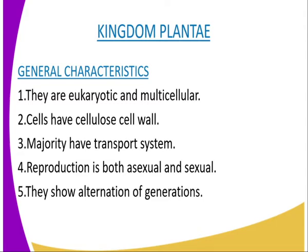Them being eukaryotic, you see that their organelles are bound — they are enclosed by a cell membrane. The second characteristic is that in most of them, the body is differentiated into leaves, stem and roots. The other characteristic is that their cells have cellulose cell walls. Another characteristic is that the majority have a transport system, whereby the transport system is normally made up of the xylem and the phloem.